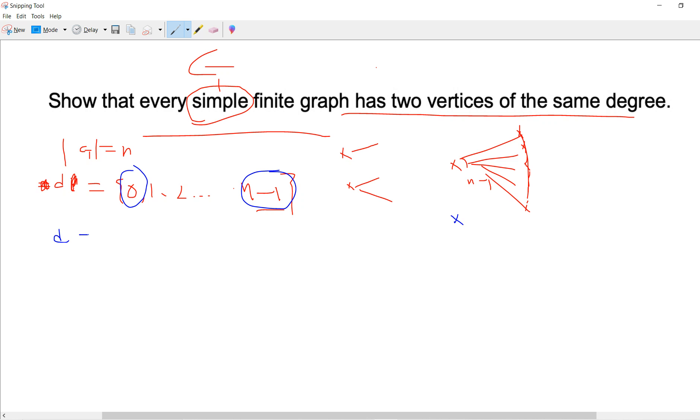So actually there is only two possibilities. One is 0, 1, 2, to n minus 2. And another possibility is that 1, 2, up to n minus 1.